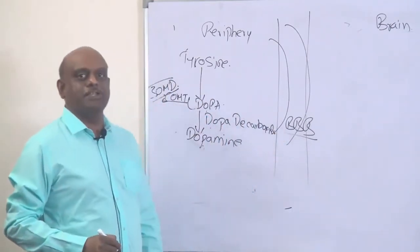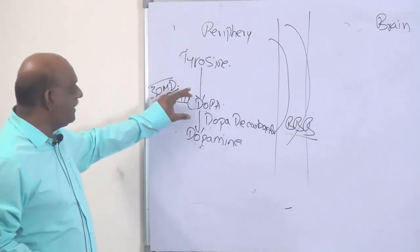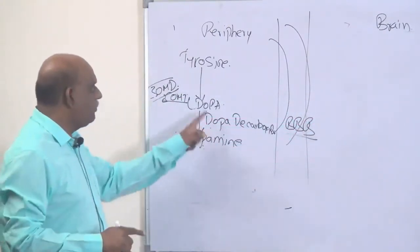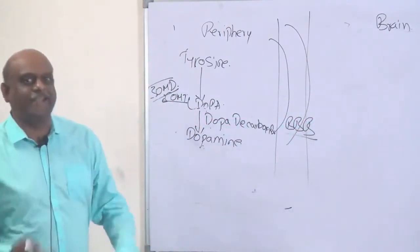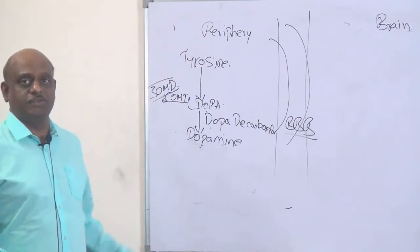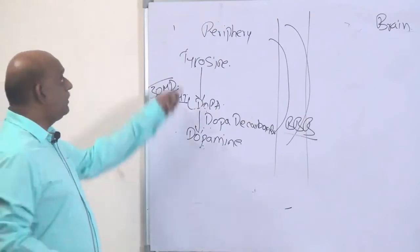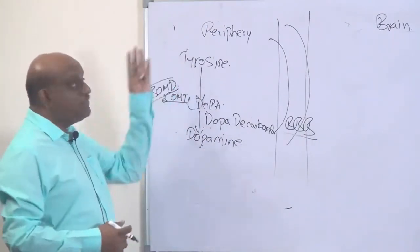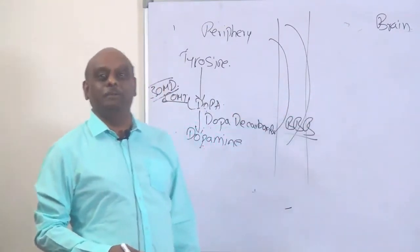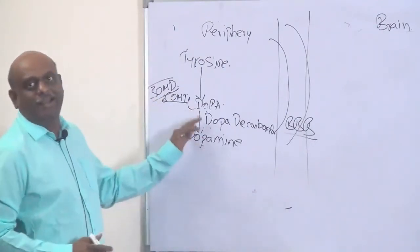So what is the purpose of the dopa decarboxylase? All the tyrosine that became L-dopa, it doesn't want all that L-dopa to go into the brain. So there are two enzymes which will try to kill this fellow, assassinate him. What are they? Dopa decarboxylase and COMT are the ones which are trying to destroy this L-dopa. Because if you eat food very rich in tyrosine, then too much of L-dopa will try to go into the brain. That is the reason God created two enzymes to destroy L-dopa in the periphery.